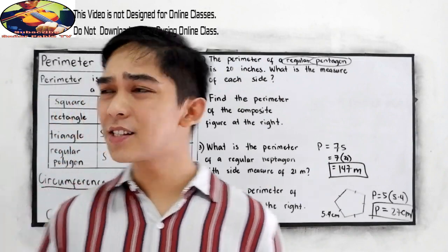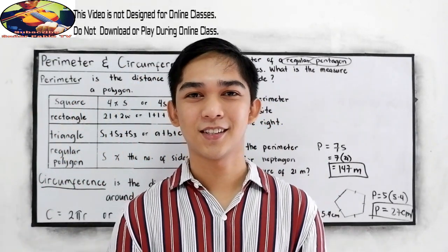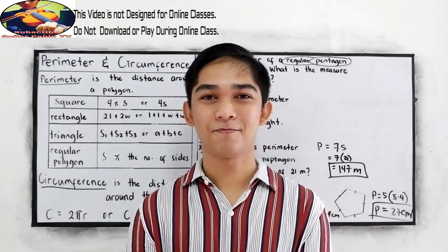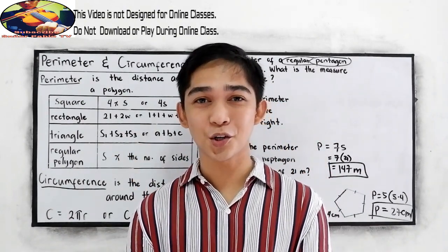So that is the perimeter and the circumference. Let's just familiarize with our formulas. Thank you for watching Senor Pablo TV.